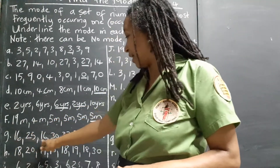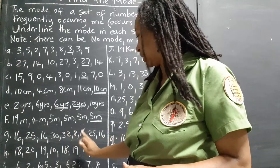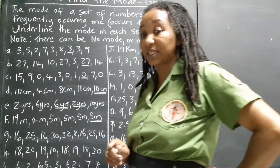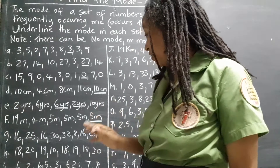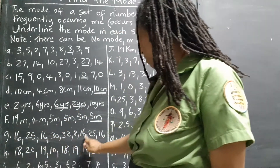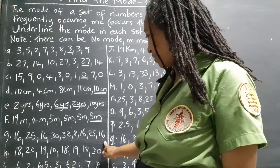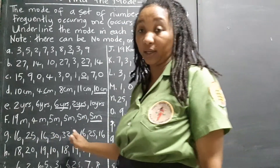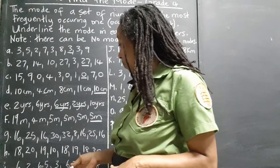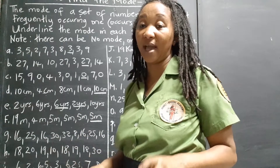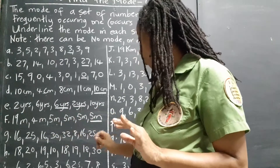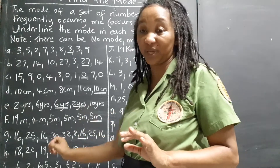Set G: 16, 25, 16, 30, 32, 8, 16, 25, 16. I can see several 16s and several 25s — are they the same count? Let's check: there are four 16s and only two 25s. The 25 is trying, but the 16 has four occurrences versus two, so 16 is the mode — the champion in this race.